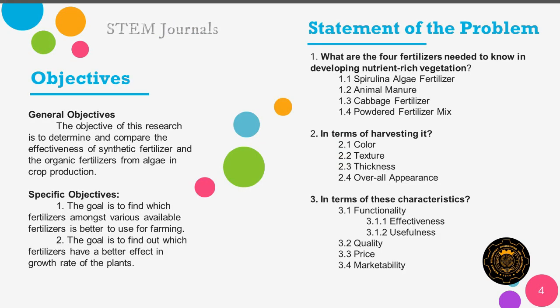Let us proceed to the statement of the problem. This study aims to answer the following questions. The first question is: what are the four fertilizers needed to know in developing nutrient-rich vegetation? The first fertilizer is spirulina algae fertilizer, which the researchers produce. Next is animal manure, third is cabbage fertilizer, and the last one is powder fertilizer mix. The researchers used these variables to compare the growth of plants with the help of different fertilizers.